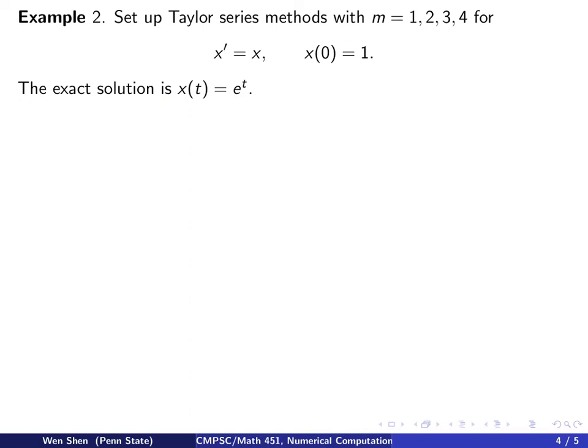For our second example, we will solve by Taylor series method with M equals to 1, 2, 3, 4, for the following rather simple problem: x prime equals to x, and x zero is 1. And one can verify that the exact solution is e to the t, because that's a function, if you differentiate, you get it back.